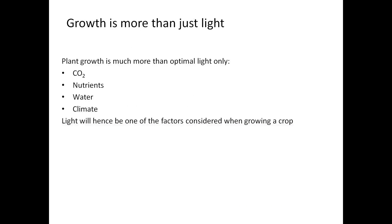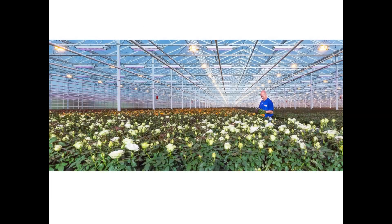Finally, optimal plant growth is much more than just a lighting plan. Plant growth is determined by a whole range of other parameters like nutrients, water, substrate and climate. A grower will always consider all of these factors. A light recipe will therefore always be a part of the growth recipe.